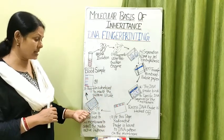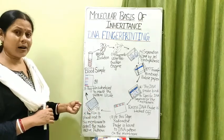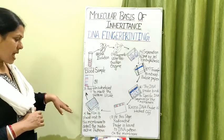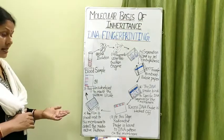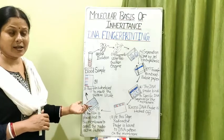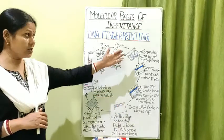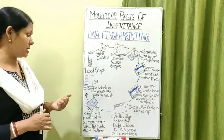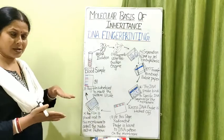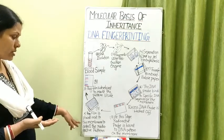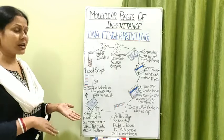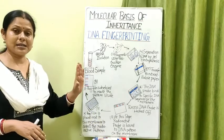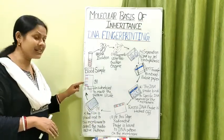The DNA probes attached to the single-stranded DNA fragments of the individual whose identification we are doing are then subjected to an X-ray film. The radioactive pattern allows detection of the DNA banding pattern present in the individual's DNA fragments, isolated from the specimen. The X-ray plate is pressed against the nitrocellulose membrane so the impression transfers, then developed by autoradiography to make the banding pattern visible.